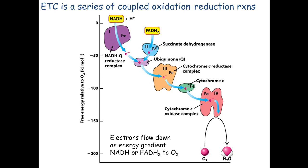From Q we give the electrons to Complex III, which gives them to cytochrome C, and cytochrome C gives them to Complex IV. Every step is a little farther down the y-axis — each transfer has a negative delta G, so it's favorable and tends not to go backwards. At Complex IV, there's a huge drop when electrons are given to oxygen to form water — it's like falling off a cliff, exceedingly favorable, which drives the whole chain forward.